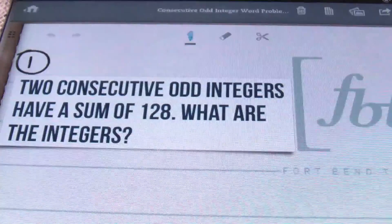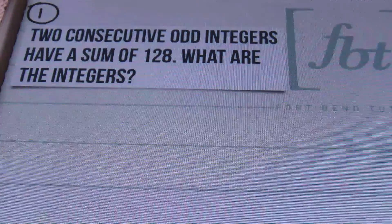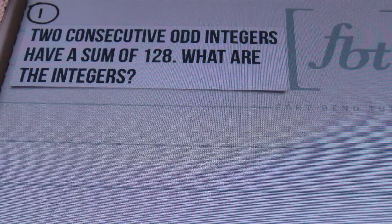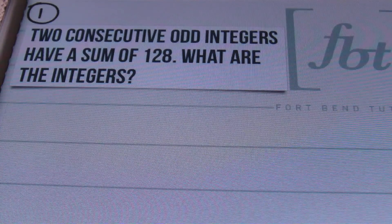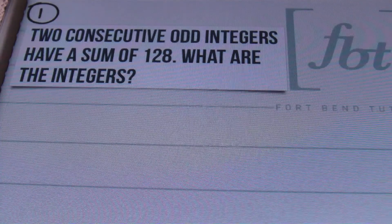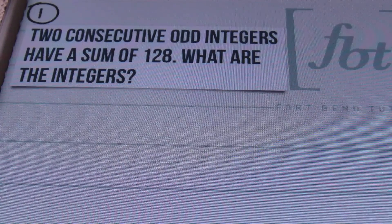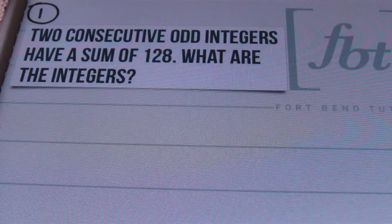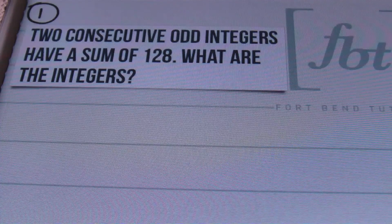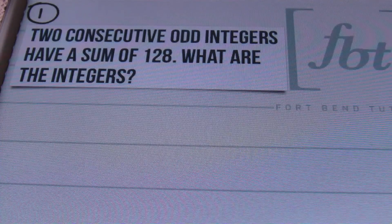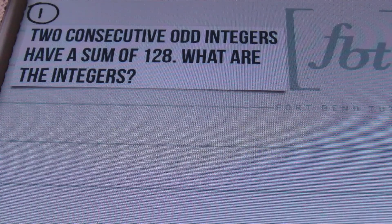This is our fourth word problem tutorial. The first thing you want to note is that anytime you're dealing with consecutive odd or even integers, the numbers are always two places away from one another. For instance, if you look at even numbers: 12, 14, 16, 18 — those numbers are separated by two. The same applies to odd numbers, where you may have 3, 5, 7, 9. These numbers are also separated by two.